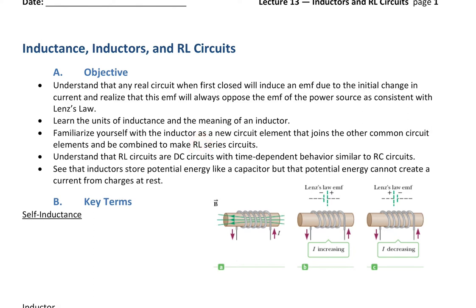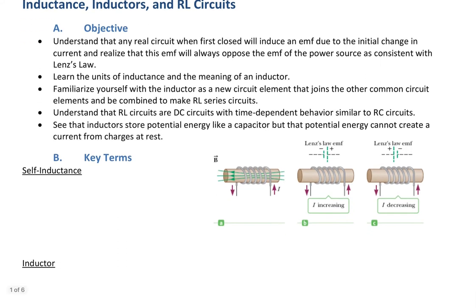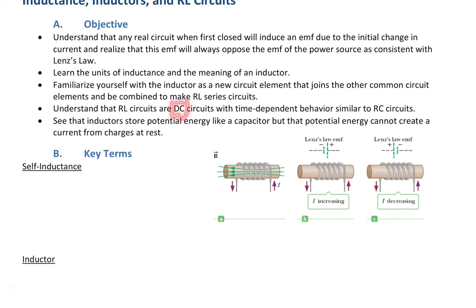We want to learn the units of inductance and the meaning of an inductor — that aforementioned circuit element — and familiarize ourselves with it as a new circuit element that can be combined with others to make RL circuits. That's a resistor-inductor circuit, because L is the letter we use for inductance. RL circuits are DC circuits with time-dependent behavior similar to RC circuits — both are connected to batteries, which are DC power sources. This is our final lecture on DC circuits; after this we move on to AC circuits, which is alternating current.